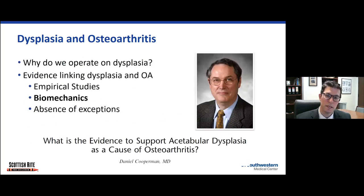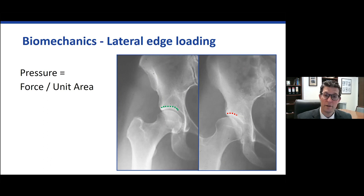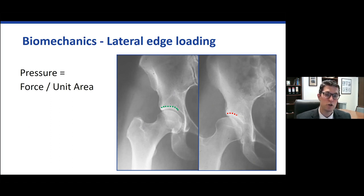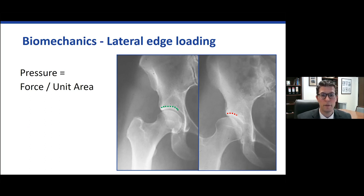We believe this happens because of biomechanical principles that lead to early degeneration of the joint. The basic principle is that pressure equals force over unit area. On the left side of the image, you can see a well-covered femoral head with a broad surface area for the socket, outlined in green. The forces of weight bearing distributed through the hip can be distributed across a broader surface area, which decreases the pressure on each unit of cartilage. In contrast, on the right side, you can see a shallow socket with a narrower surface area to distribute all those forces, which increases the pressure on that cartilage and leads to earlier hip degeneration.